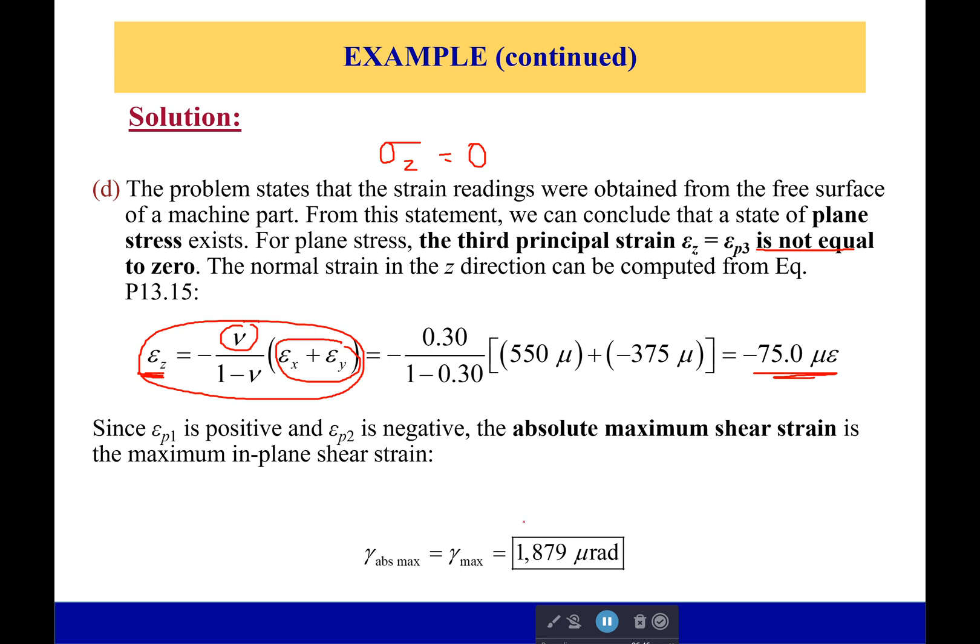And so from that, that means that our max in-plane shear strain is equal to our max absolute shear strain. If this had been more negative than negative 375, we would have used this to calculate our max absolute maximum shear strain. But since it's in between these two, then this is already taken into account, the maximum. Sorry, our previous shear stress was the maximum.